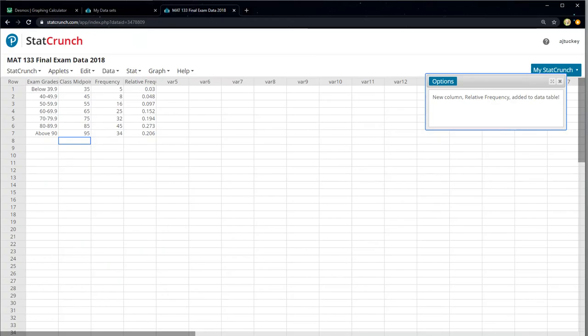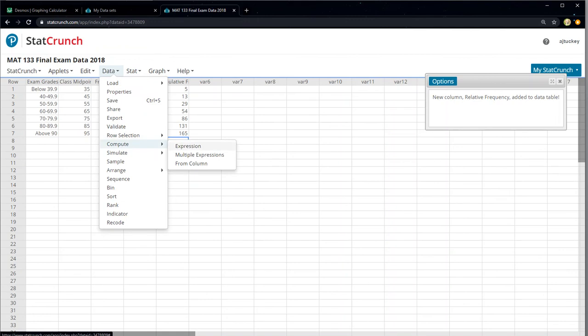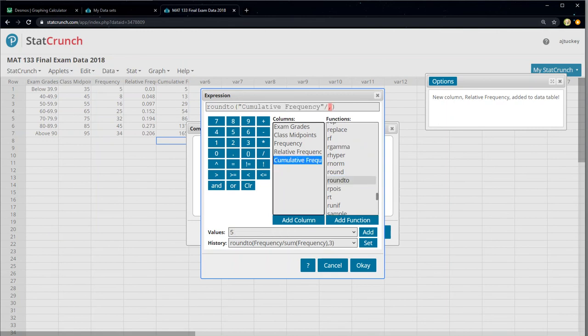Or I can have StatCrunch do it for me. Now, the advantage to StatCrunch is that if I have StatCrunch do it, then if it's a really big table, then I don't have to worry about it so much. I can make it do all the work for me. I typed in the cumulative frequencies myself because I don't think there's an easy way to compute that. But the cumulative relative frequency is not hard to do. So, I'm going to go to data, compute, expression. I'm going to build a new one. And then I'm going to round to, it's going to be very similar to the other one. And then I want it to take the cumulative frequency and I divide by, and I could say the sum of the frequencies, which is 165. Or I can just type 165. I know what they make.